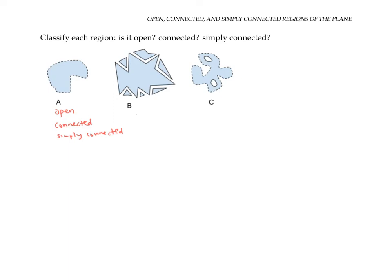The second region B is not open, because it contains some of its boundary points. In fact, it contains all of its boundary points, so it's closed. It's not connected, because it's divided up into seven different components. But it is simply connected — it doesn't have any holes, and if I draw any simple closed curve that lies entirely in the region, it'll enclose only points in that light blue region.